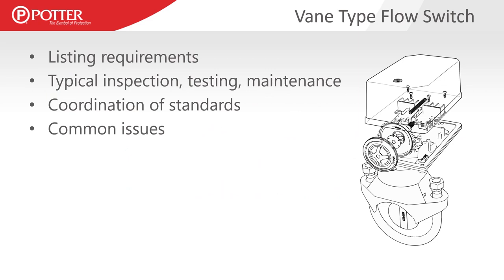Probably the most common device monitoring or supervising a sprinkler system is a typical vein type flow switch. We'll address a few points about these standard vein type flow switches: their listing requirements, the typical inspection, testing, and maintenance that occurs, the need to coordinate standards — which is critical for this device — and the common issues found with inspection, testing, and maintenance of a vein type flow switch.